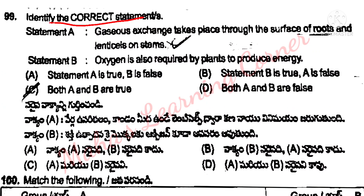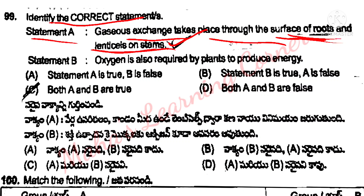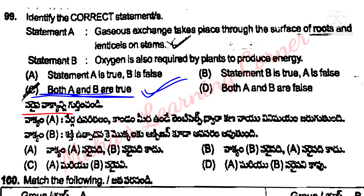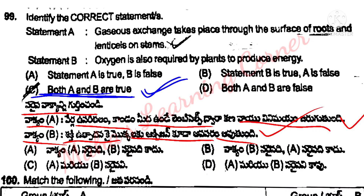Identify the correct statements. Statement A: Gas exchange takes place through the surface of roots and lenses of stems — this is correct. Gases exchange through stomata but also through surface of roots and lenses on stems. Statement B: Oxygen is also required by plants to produce energy. Both A and B are correct. Option C is the correct answer.